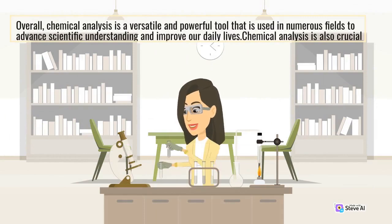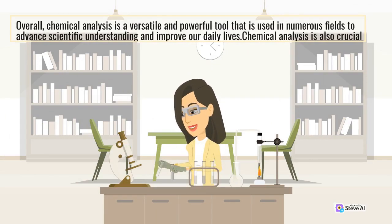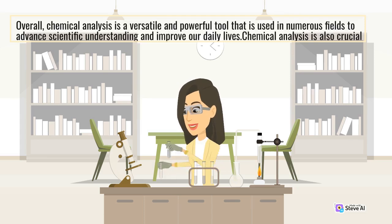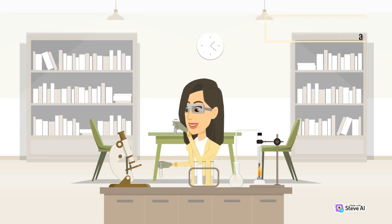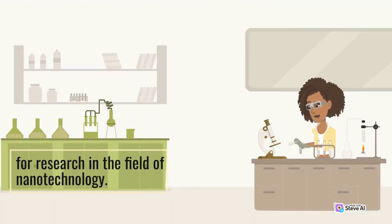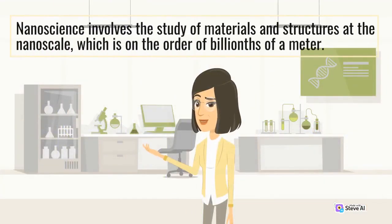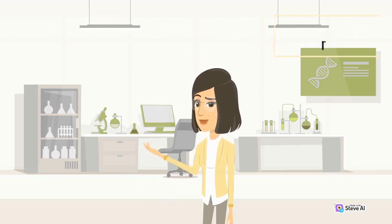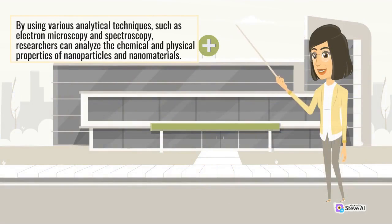Overall, chemical analysis is a versatile and powerful tool that is used in numerous fields to advance scientific understanding and improve our daily lives. Chemical analysis is also crucial for research in the field of nanotechnology. Nanoscience involves the study of materials and structures at the nanoscale, which is on the order of billionths of a meter. By using various analytical techniques, such as electron microscopy and spectroscopy, researchers can analyze the chemical and physical properties of nanoparticles and nanomaterials.